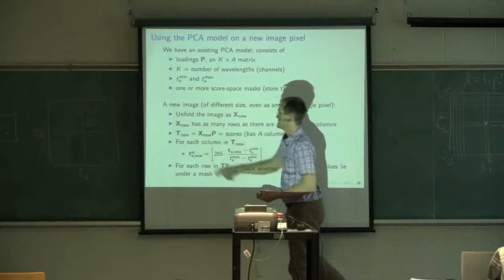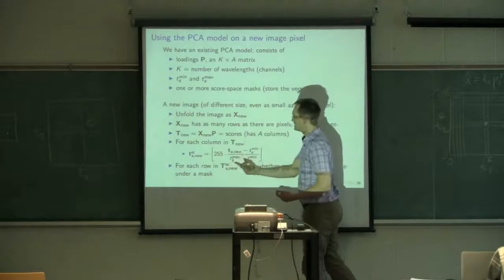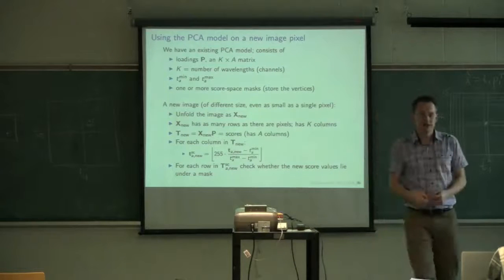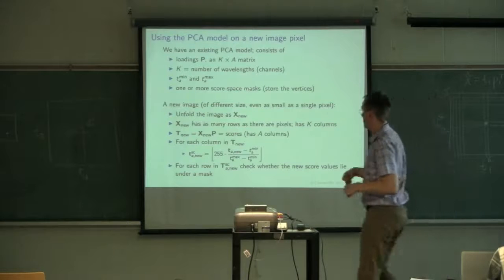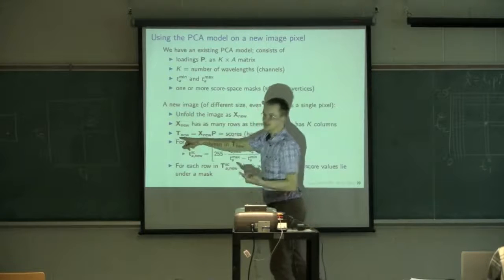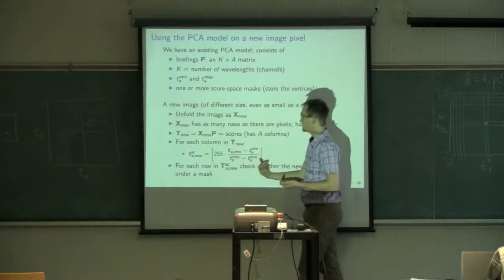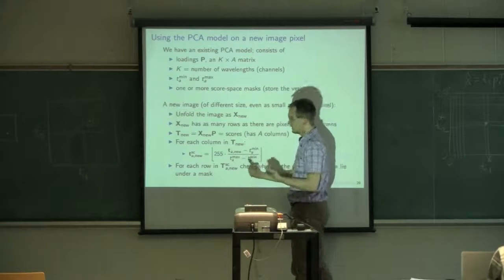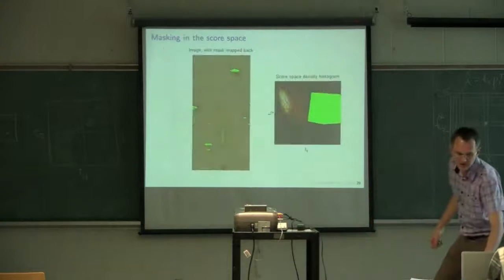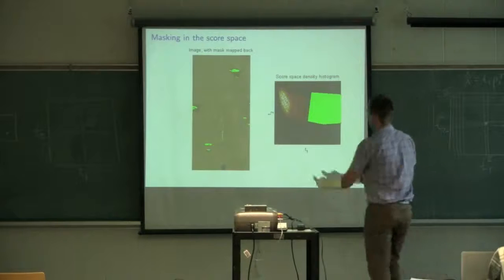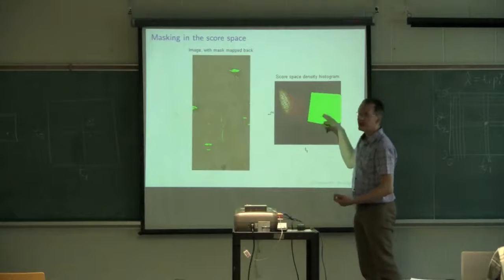Once you calculate your X-New and you've unfolded it, you multiply it by the loadings to get your Ts, and then you go scale those Ts to scale them so that you get an integer between 0 and 255. Let's say I'm dealing with a single pixel. One particular pixel. I calculate my T values, T1 and T2, for that new pixel. I scale between 0 and 255, T1, scale T2 between 0 and 255. Now all I do is I come back to this mask, which I know goes from 0 on this end to 255, and I find where that pixel lies.